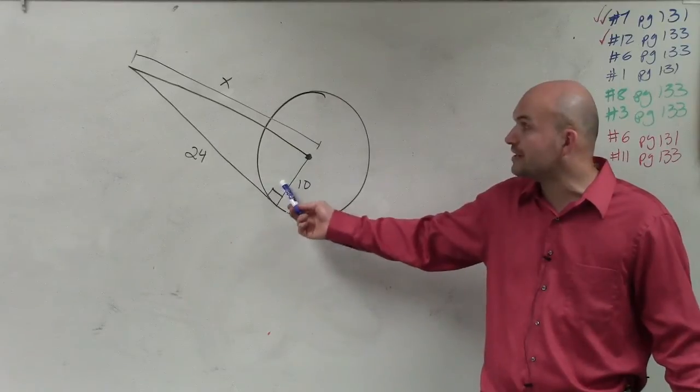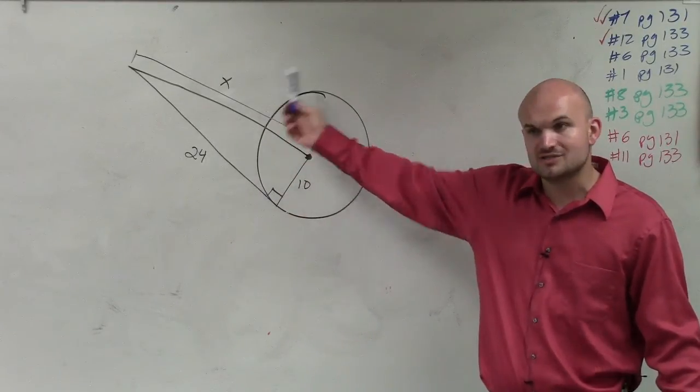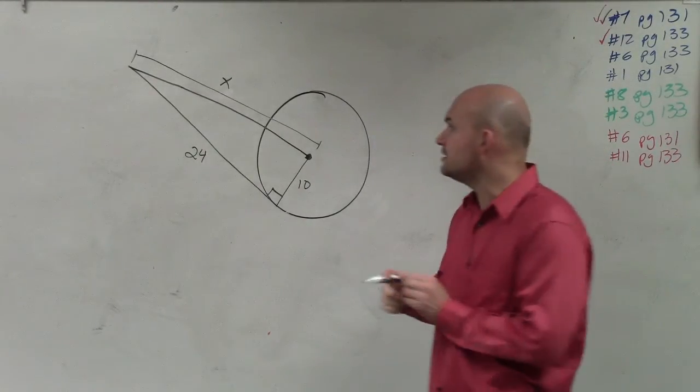Therefore, we have a 90 degree angle and a triangle that includes a 90 degree angle. And if we want to find the value of x, you see we have a right triangle. And we can solve for that right triangle by using the Pythagorean theorem.